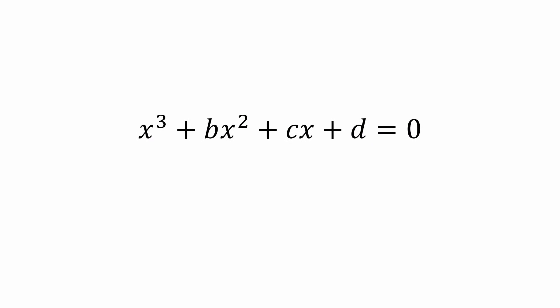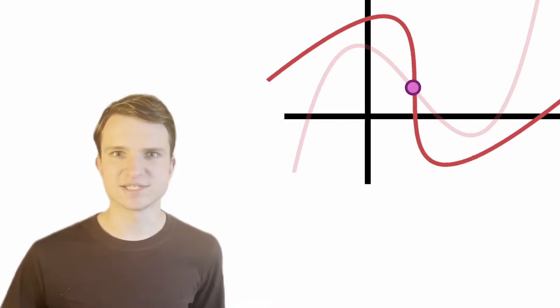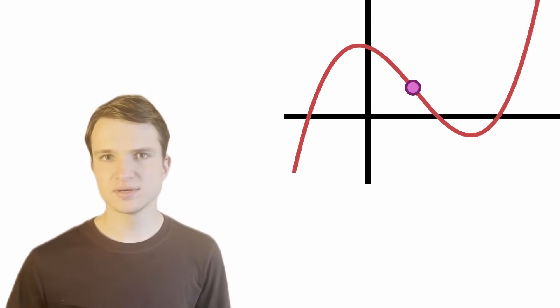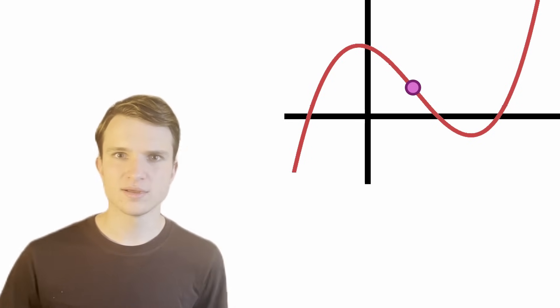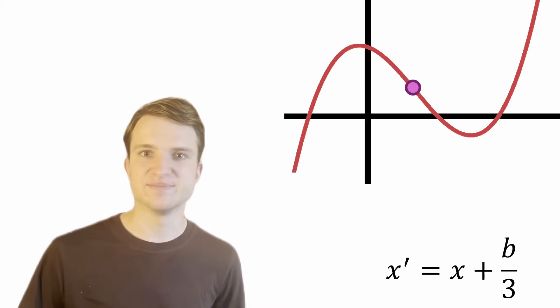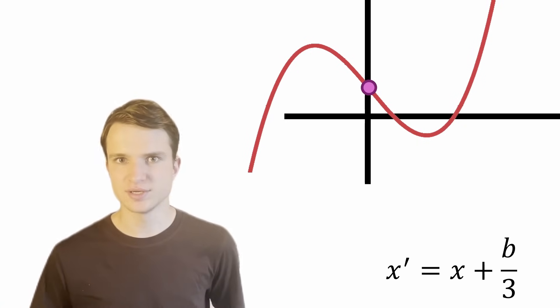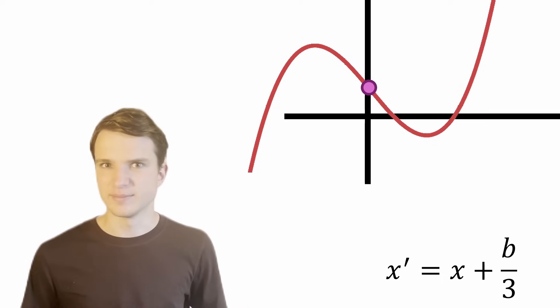This is a general cubic equation. If the leading coefficient was not 1, we could just divide by it to get an equation with leading coefficient 1. We'll use a similar trick to what we did with the quadratic to depress this cubic — which means get rid of the x² term. Here's the graph of a general cubic. Unlike the quadratic, there is no line of symmetry. But there is a rotational symmetry of 180 degrees about a point called the point of inflection. For those familiar with calculus, this is where the second derivative equals zero, and it has coordinates x = -b/3a. So to shift this point to the y-axis, we use the substitution x' = x + b/3a.